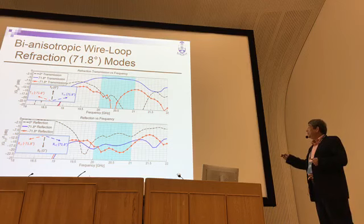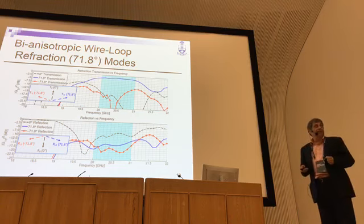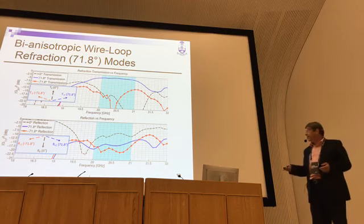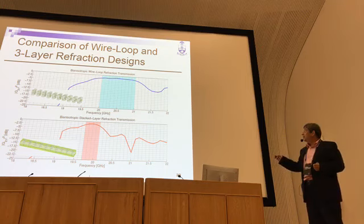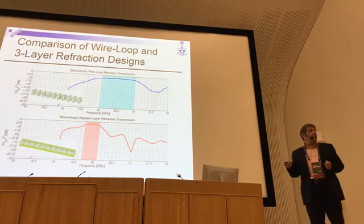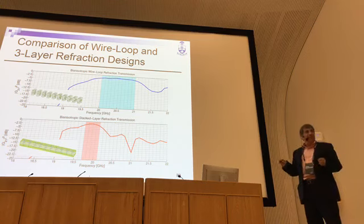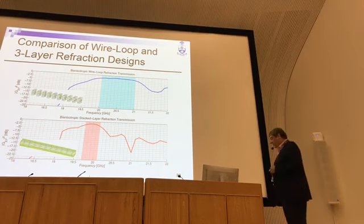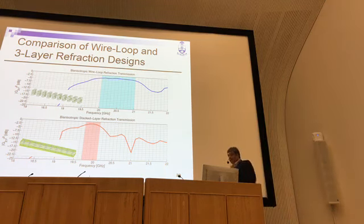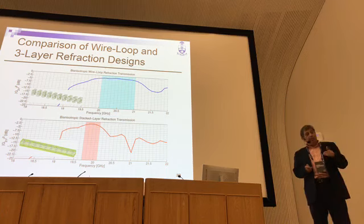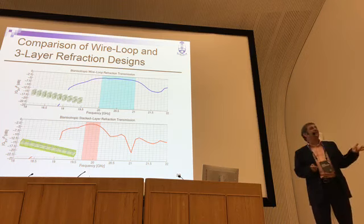Comparing the wire-loop design with the dogbone structure, the wire-loop gives quite more bandwidth. This was not fully optimized to satisfy the balancing condition for the loop unit cell, so I believe there is much more room for improvement. Now, given bianisotropic reflectionless refraction, what can you do with it? You can make lenses and combinations of lenses.